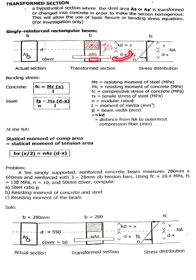For the tension area, that is n times As times the distance d minus x. So the full equation is: b times x squared over 2 equals n times As times d minus x.